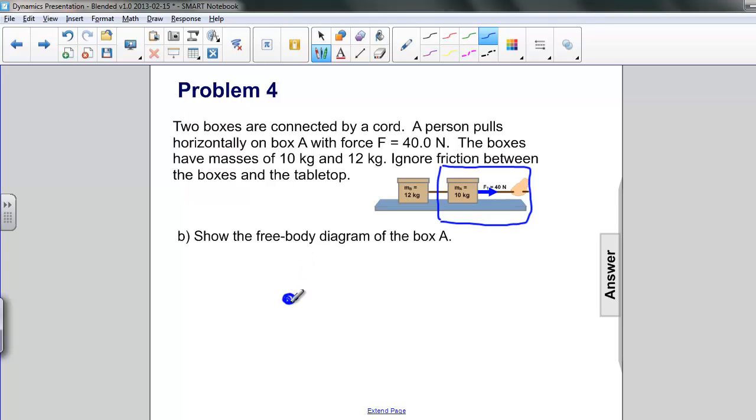This time in the vertical direction, we have a weight, which is denoted mg. Here we use a subscript A because this is box A. And exactly opposing that, we have a normal force, F sub n.